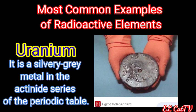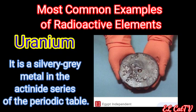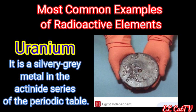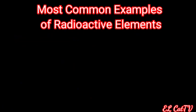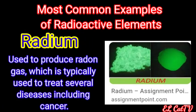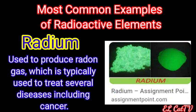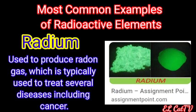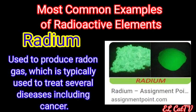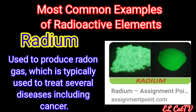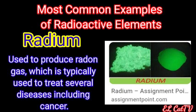Uranium is a silvery-gray metal in the actinide series of the periodic table. Another example is radium. It is used to produce radon gas, which is typically used to treat several diseases, including cancer.